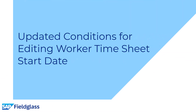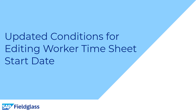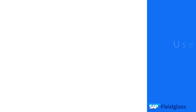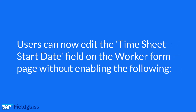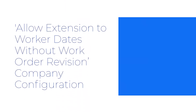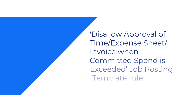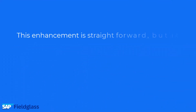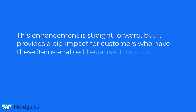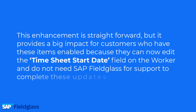The next self-service innovation is Updated Conditions for Editing Worker Timesheet Start Date. Users can now edit the Timesheet Start Date field on the Worker form page without enabling the following: Allow Extension to Worker Dates Without Work Order Revision Company Configuration, and Disallow Approval of Time, Expense Sheet, and Voice when Committed Spend is Exceeded Job Posting Template Rule. This enhancement provides a big impact for customers who have these items enabled, as they can now edit the Timesheet Start Date field on the Worker without needing SAP Fieldglass support.